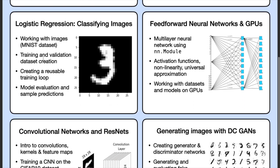Next, we will move on to classifying images using logistic regression. Through this, we will learn to work with images and create training and validation datasets. We will create a reusable training loop that we will continue to improve over the course of the next few chapters. We will learn how to evaluate a model and generate sample predictions, classifying images from the MNIST handwritten digits database.